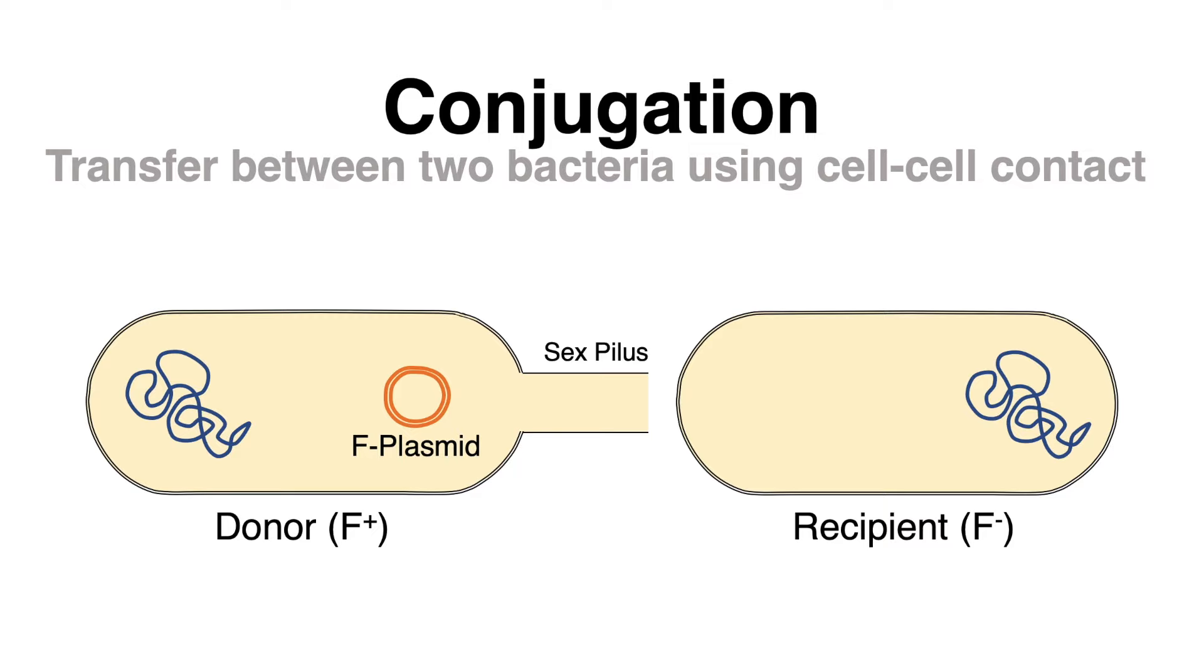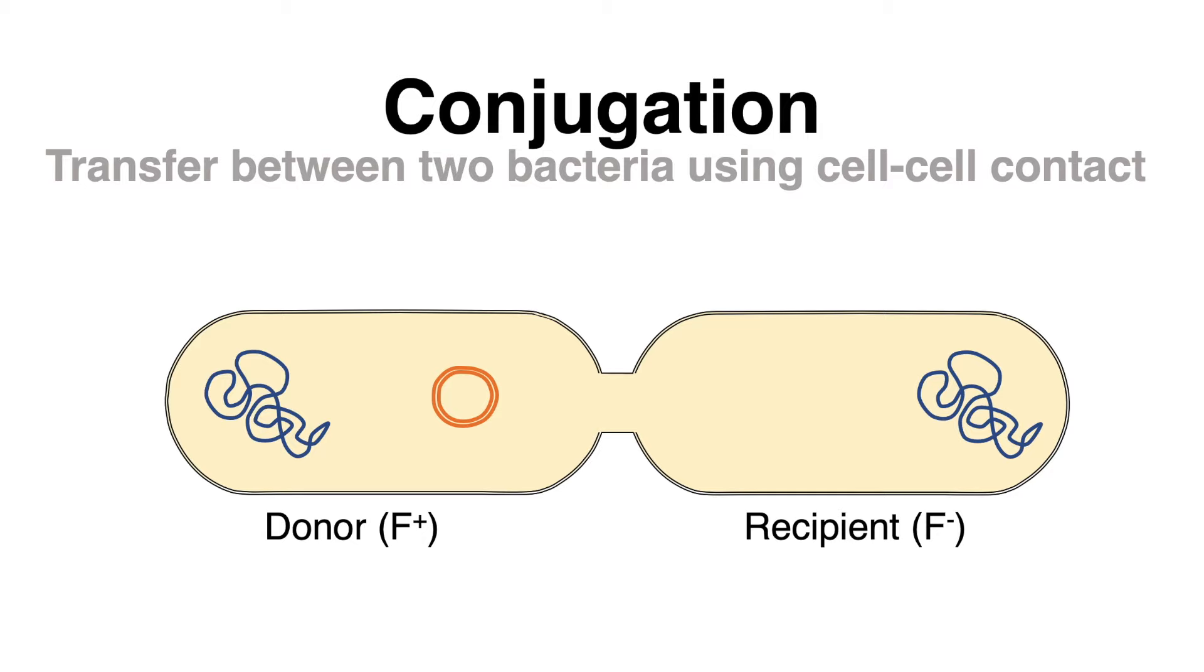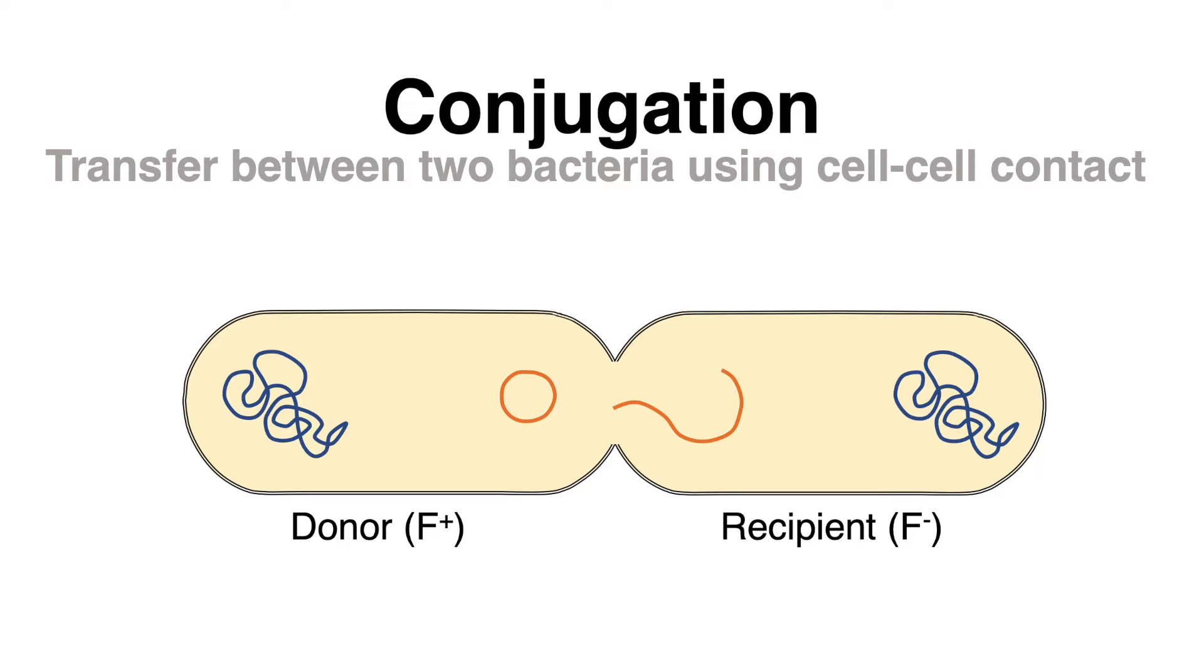This protein tube attaches to the recipient cell and brings the cells together. One strand of the plasmid DNA passes via a channel from the donor to the recipient. After replication, the double-stranded DNA is present in both cells.